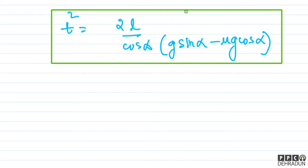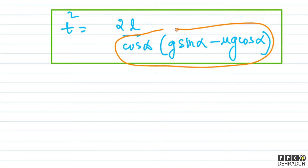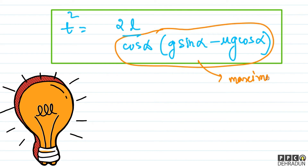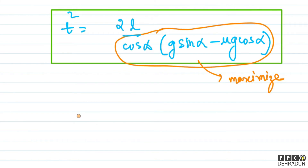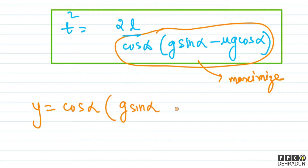To minimize t, we need to maximize the denominator. So if we define Y = cos alpha multiplied by (g sin alpha − mu g cos alpha), we need to maximize this expression.